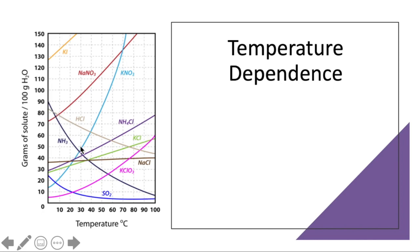And some of the lines go down as we increase the temperature, and those are gases. So why does this happen? Most salts become more soluble at higher temperatures.